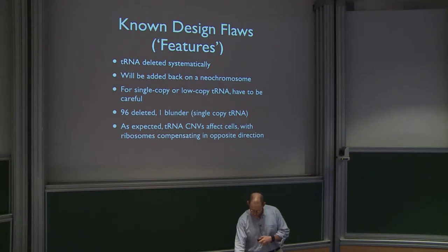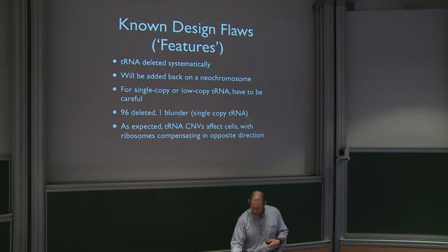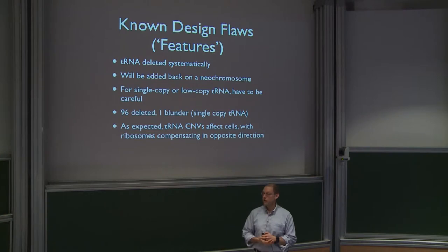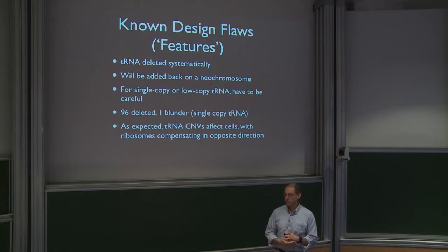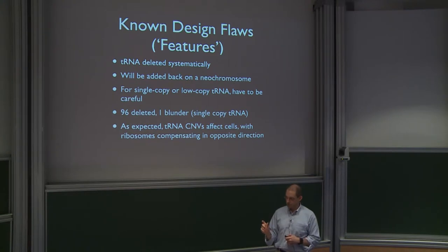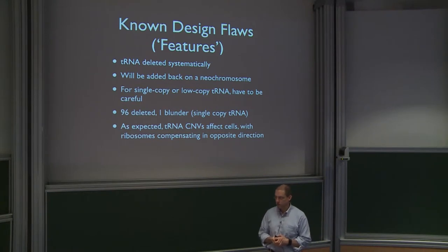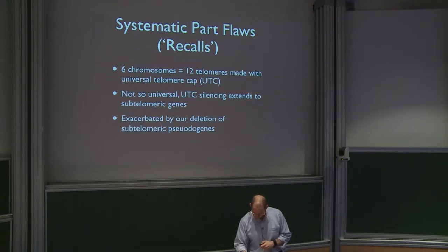The tRNA copy number variation — transiently having reduced copy number — ends up with ribosomes compensating in the opposite direction. If you look at those 2017 papers, each yeast strain with a synthetic chromosome has mRNA-seq done, and pretty much the only significant differences are that ribosomal genes are overexpressed.